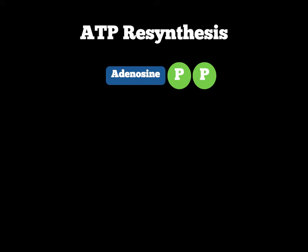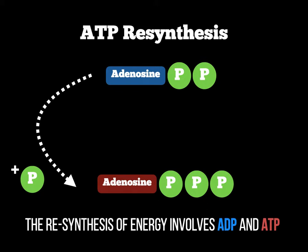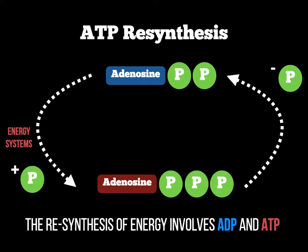For those that have seen the ATP resynthesis cycle screencast, just to recap: when we have the ADP compound present — adenosine and two phosphates — if we want to restore ATP from ADP, we're gaining a phosphate in an endothermic reaction to create ATP with three phosphates, and then we're losing the phosphate in an exothermic reaction to create energy for the body. This is the ATP resynthesis cycle. The phosphate is created from the three energy systems: the ATP-PC system, the lactic acid system, and today's screencast, the aerobic system.